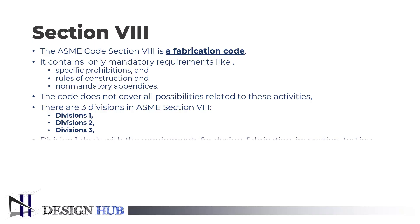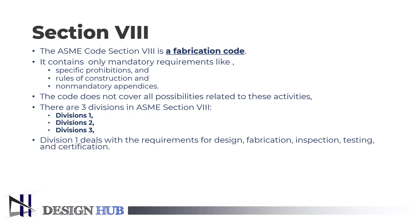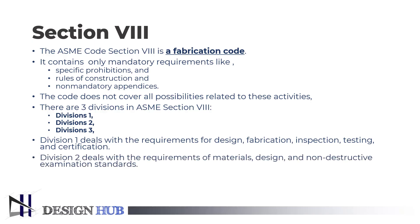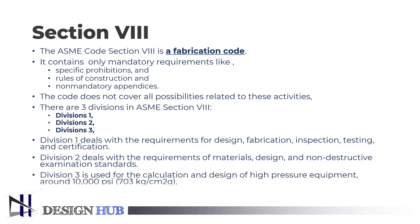Division 1 deals with the requirements for design, fabrication, inspection, testing, and certification. Division 2 deals with the requirements of materials, design, and non-destructive examination standards. Division 3 deals with the design and calculation of pressure vessels significantly working at a very high pressure range, above 10,000 pounds per square inch. Moreover, let us see what Division 1 is all about.